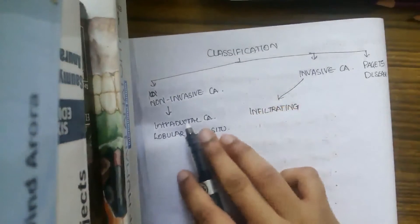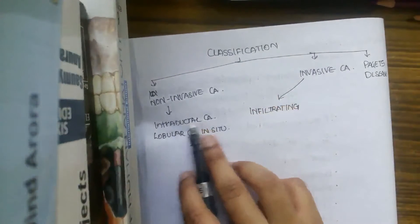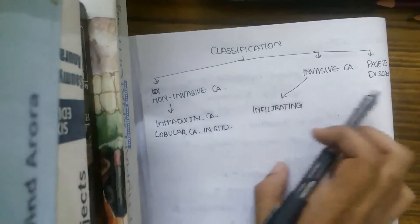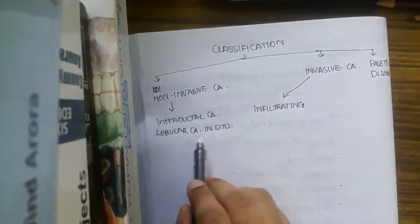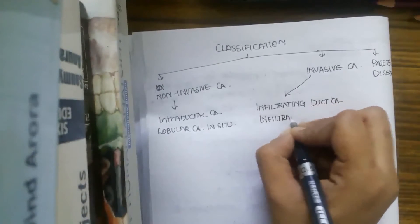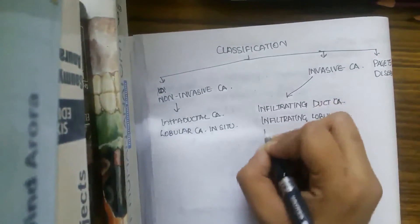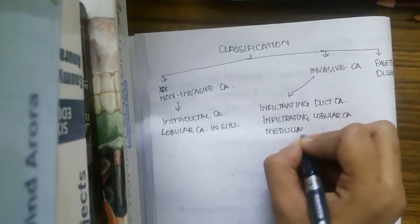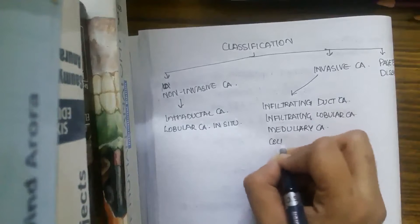Let us deal with the classification of the breast. Carcinoma of the breast is divided into three types: non-invasive carcinoma, invasive carcinoma, and Paget's disease. Non-invasive carcinoma is of two types: intraductal carcinoma and lobular carcinoma in situ. Invasive carcinoma includes infiltrating duct carcinoma, infiltrating lobular carcinoma, and medullary carcinoma, among others.